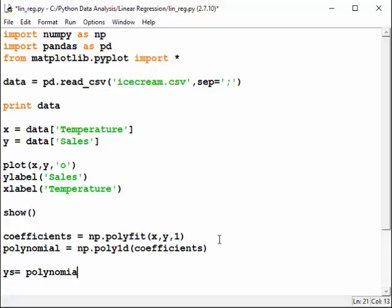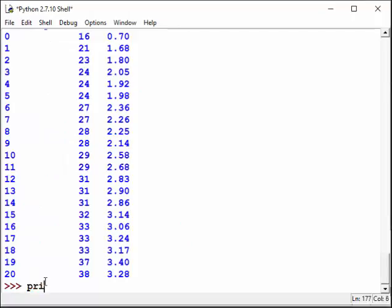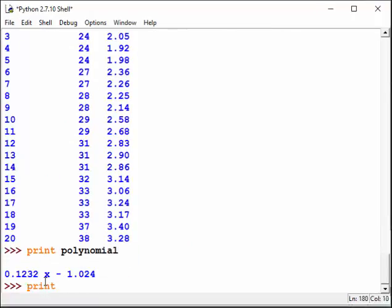ys is going to be the array containing the values of the polynomial. And let's look at this polynomial. Let's print it out. And let's look at the coefficients.